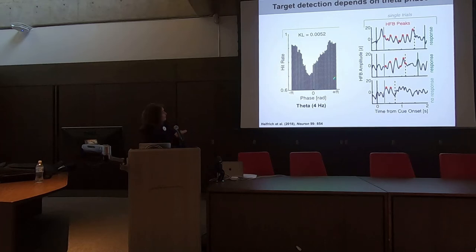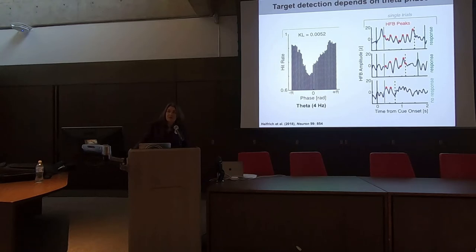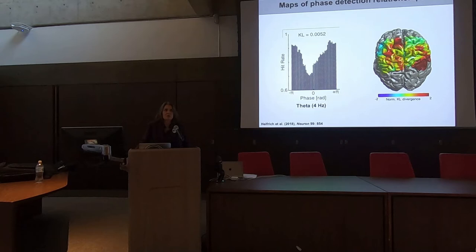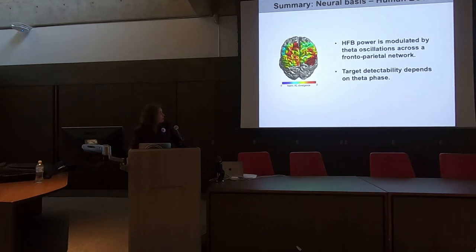We asked at which recording sites we would see phase-detection relationships. Interestingly, we see the strongest ones in frontoparietal cortex — in these higher-order regions that have a lot to do with the control of attention. To summarize what I've shown from the human brain: high-frequency broadband power is modulated by theta oscillations across the frontoparietal network, and target detectability depends on theta phase.